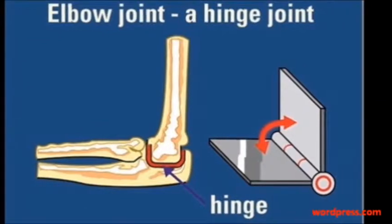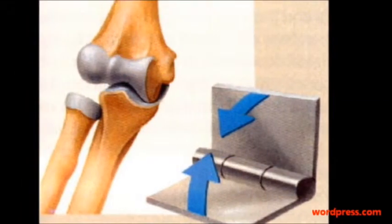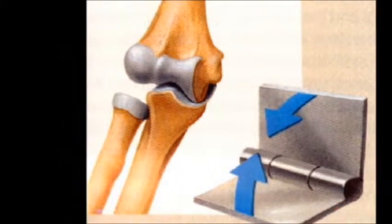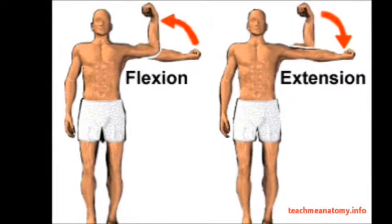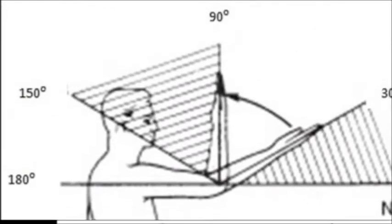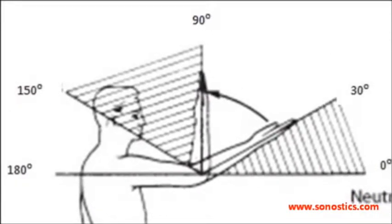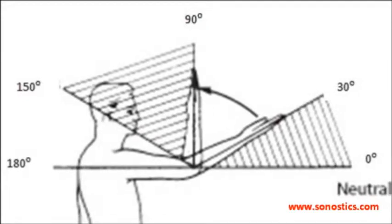The elbow itself is essentially a hinge joint, meaning it bends and straightens like a hinge, which allows movement in only one plane. The elbow joint can perform extension and flexion. The range of motion of the human elbow is about 0 degrees from extension to 145 to 150 degrees of flexion.